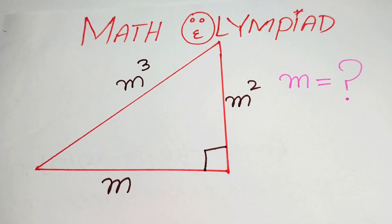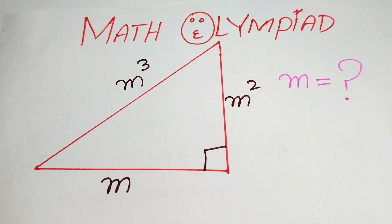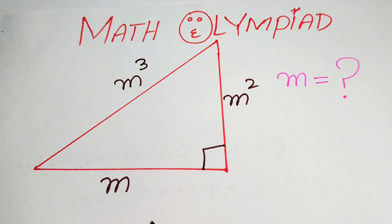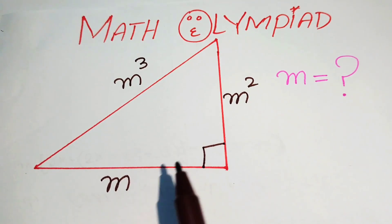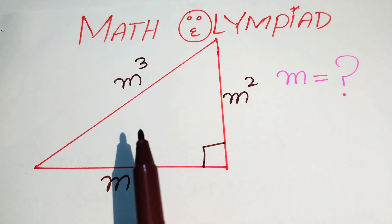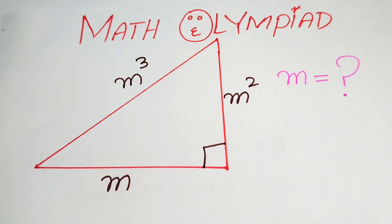Hello everyone, welcome. Let's solve this nice math Olympiad geometry problem. Here we have a right triangle in which the length of its sides are m, m squared, and m cubed respectively.